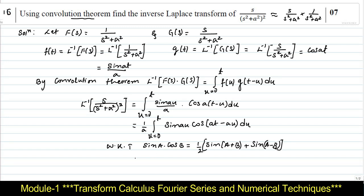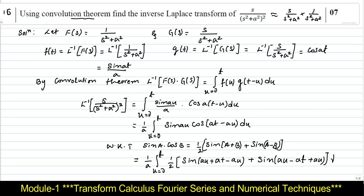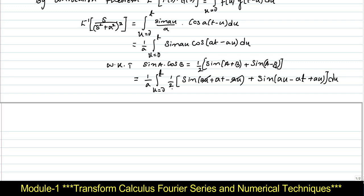Using this identity in the above integrand, we get (1/a) times the integral from u=0 to t of (1/2)[sin(au + at − au) + sin(au − (at − au))] du. The au terms cancel in the first part, and taking 1/2 outside, we are left with (1/2a) times the integral from 0 to t of [sin(at) + sin(2au − at)] du.